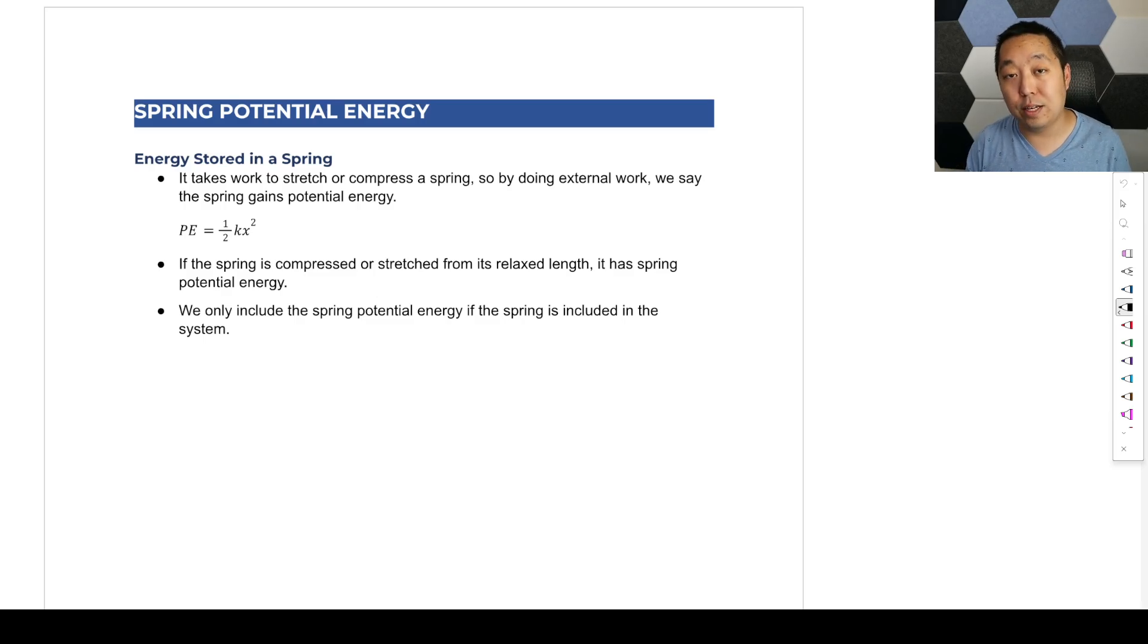Alright, so now we're going to focus on the third and last form of energy in this unit: spring potential energy. So here's the idea. Energy can be stored in a spring because it ultimately takes work to stretch or compress a spring, which is where that energy comes in. It's called spring potential energy because of the potential to turn into other forms of energy or kinetic energy.